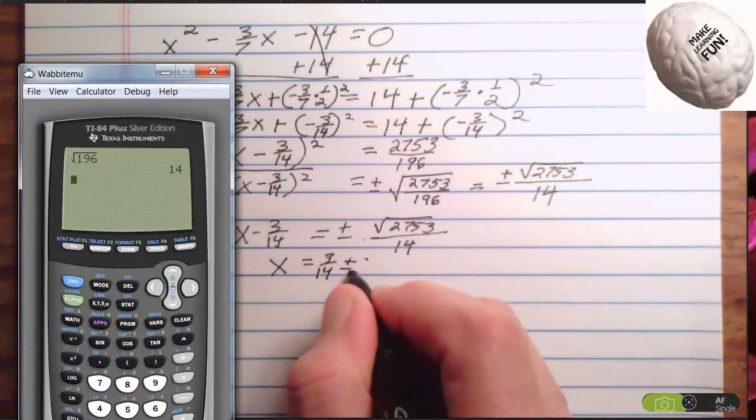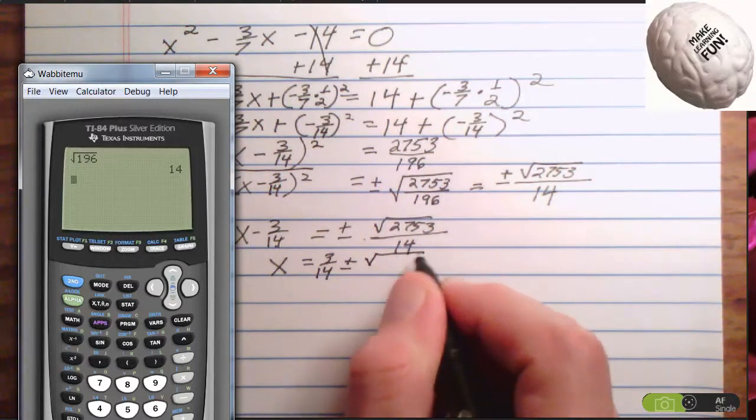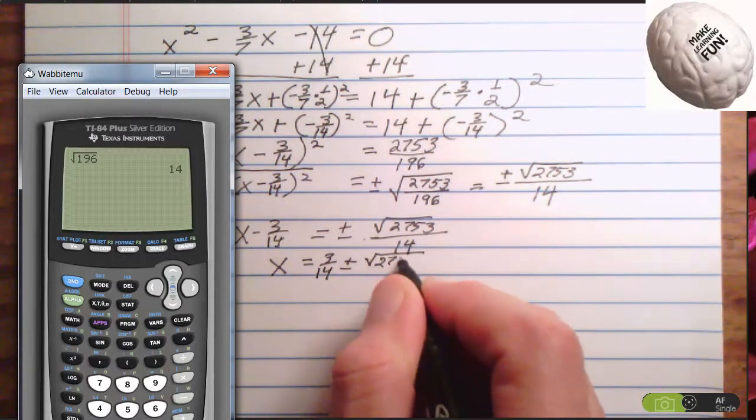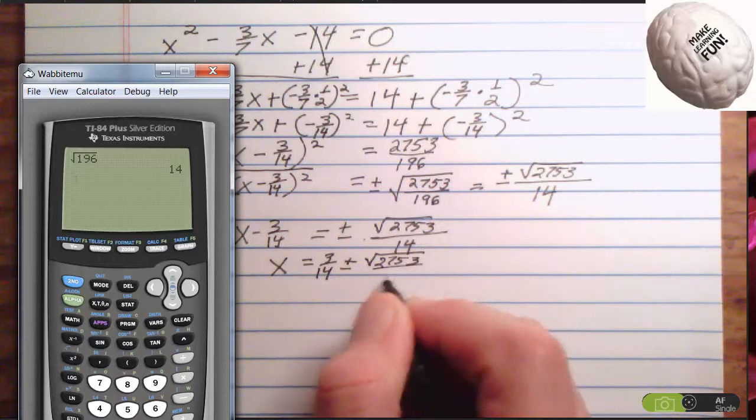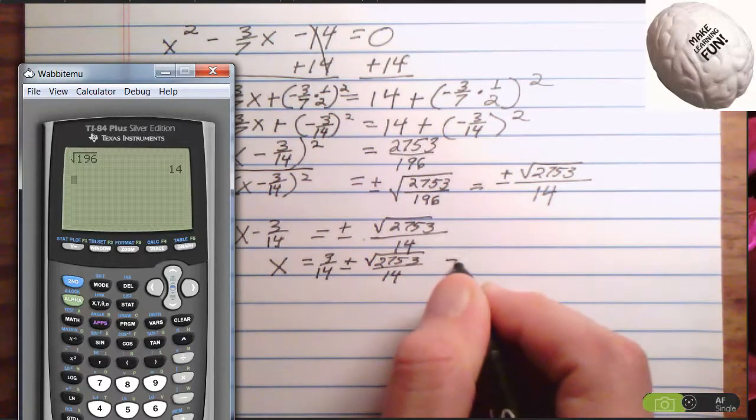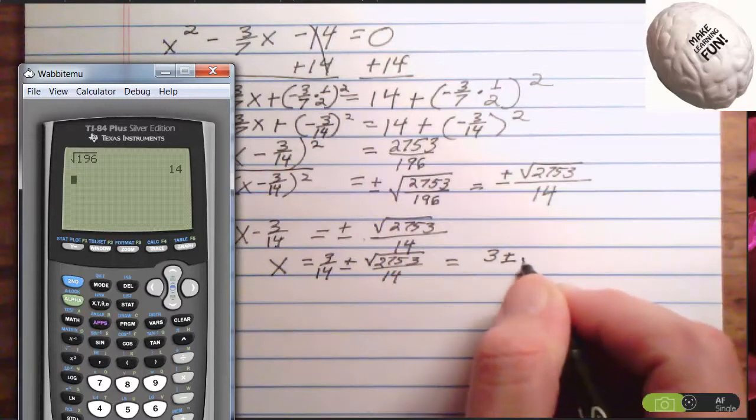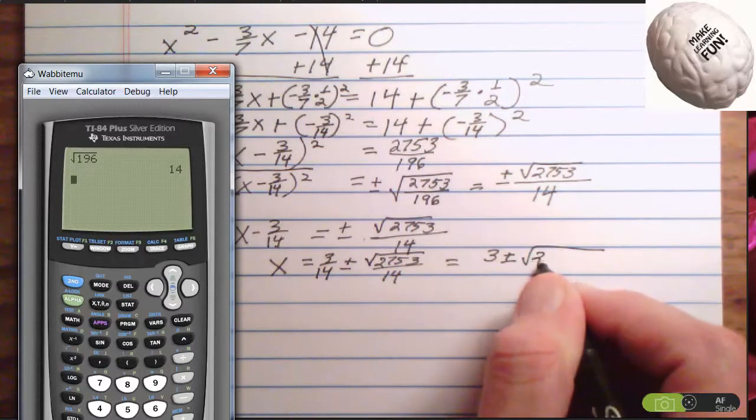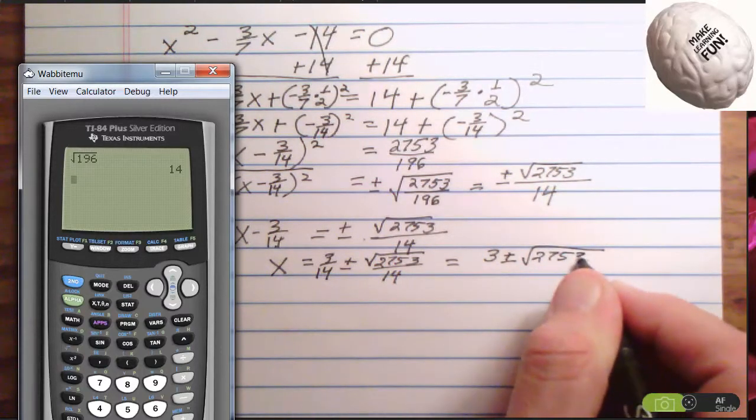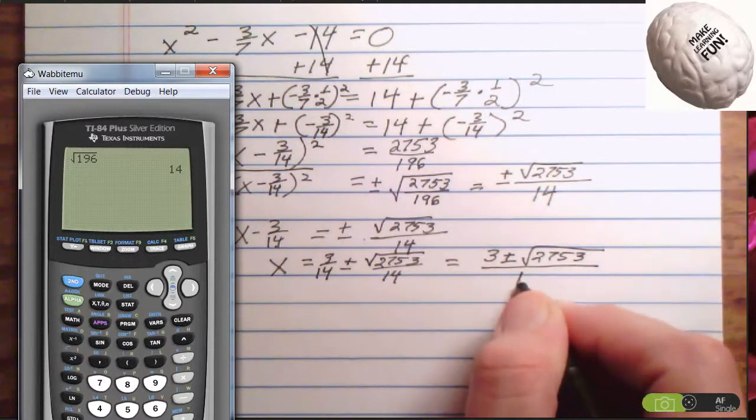So plus or minus the square root of 2753 over 14. So that will be 3 plus or minus the square root of 2753 over 14.